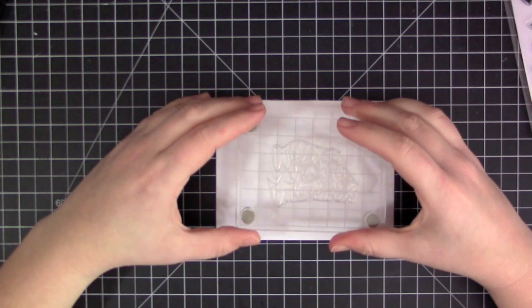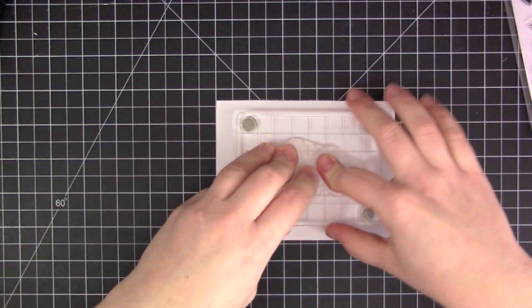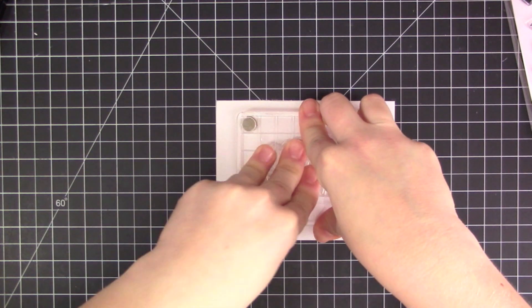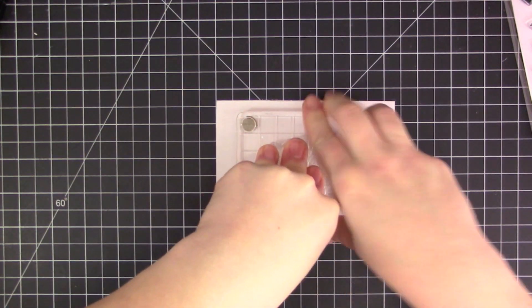I've completely covered my stamp with Versamark ink, which is just a clear sticky ink that can be used for embossing. I'm going to press this down onto my piece of canvas.